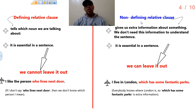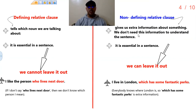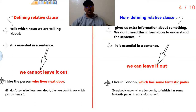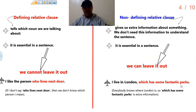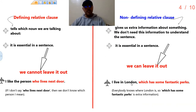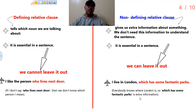So now let's move to talk about non-defining relative clauses. A non-defining relative clause gives us extra information about something — additional information. We don't need this information to understand the sentence, which means this type of relative clause is not essential to the meaning of the sentence — it's not necessary. We can leave it out if we want. Example: "I live in London, which has some fantastic parks." The clause "which has some fantastic parks" is not necessary to the meaning of the sentence. Everybody knows where London is, so "which has some fantastic parks" is just extra information. We can say just "I live in London" and it gives full meaning.